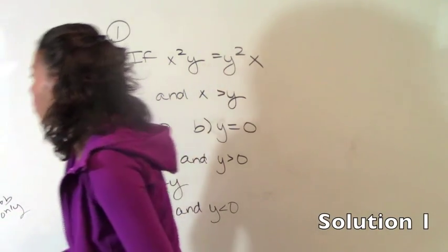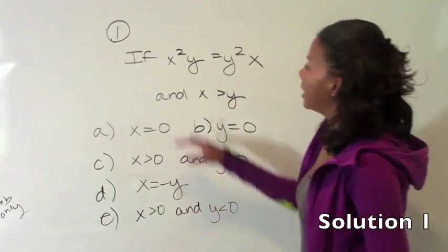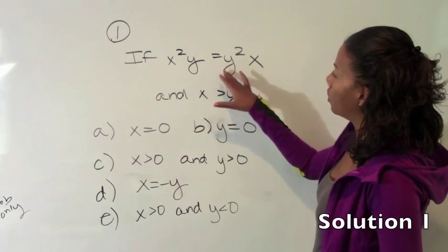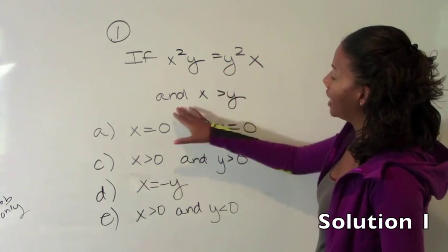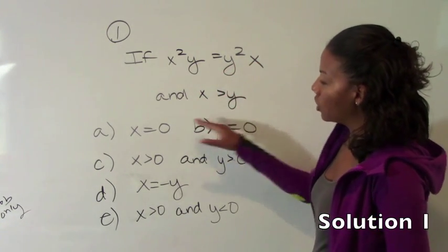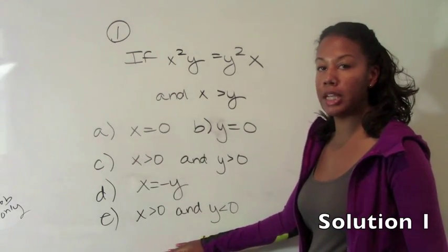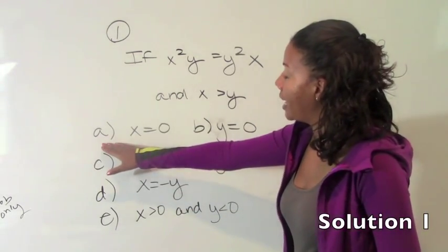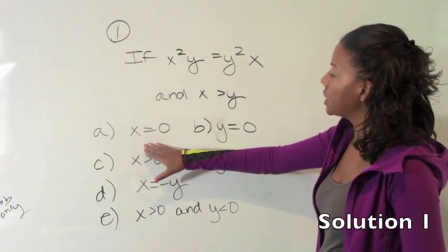Number one says if x squared y equals y squared x, and x is greater than y, which of the following could be true? Okay, so for a, could a be true, x equals zero?